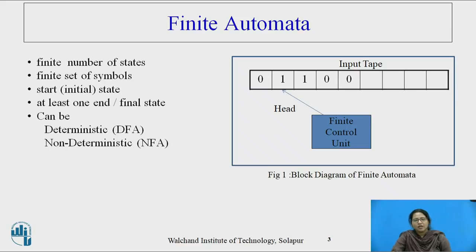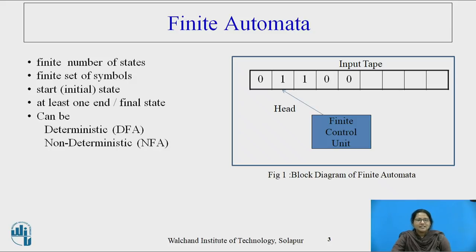As we have already seen, finite automata has a finite number of states, a finite set of symbols, compulsorily a single start or initial state, and at least one end or final state. It can be deterministic, that is DFA, or non-deterministic, that is NFA.